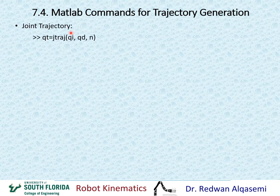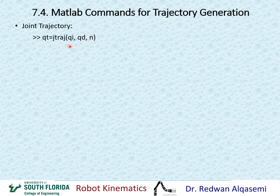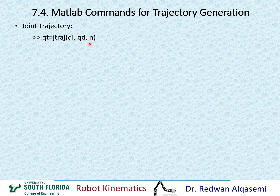The first command is the joint trajectory command, called JTRAJ. That's the function JTRAJ, and it's part of the MATLAB Robotics Toolbox. The input to this function is QInitial, QDesired, and the number of steps or via points. The joint trajectory creates a trajectory for each one of the joints, where QInitial is the initial joint angle and QDesired is the final joint angle.